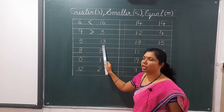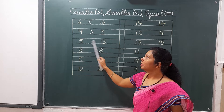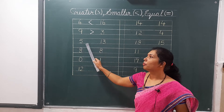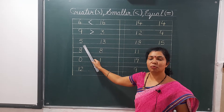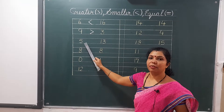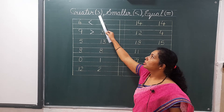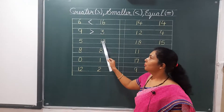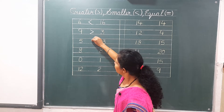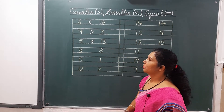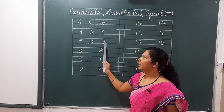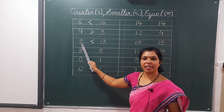Five and thirteen. Five comes before thirteen, so five is smaller than thirteen and thirteen is greater than five. We have to use the greater sign for thirteen. Thirteen is greater than five.